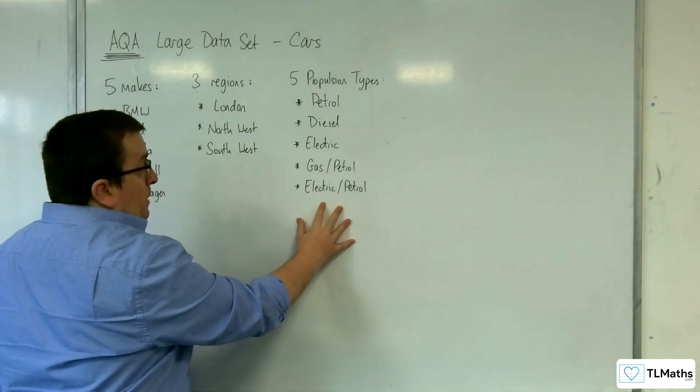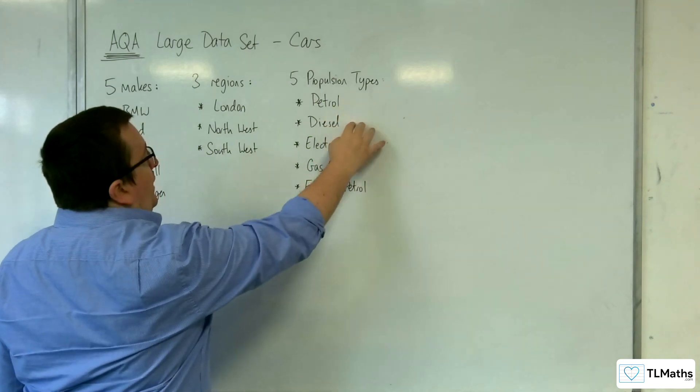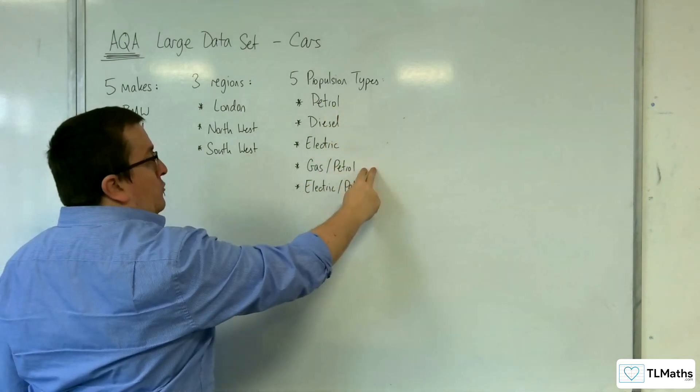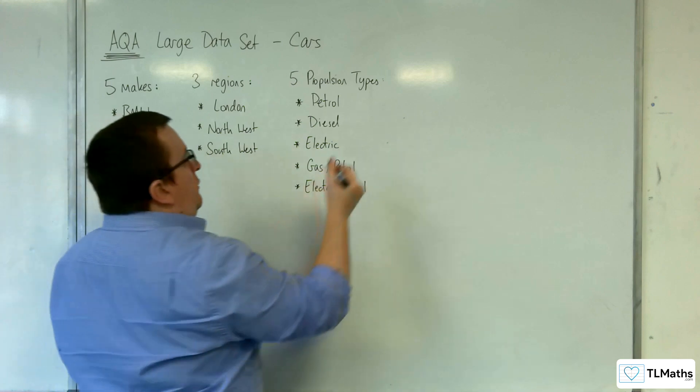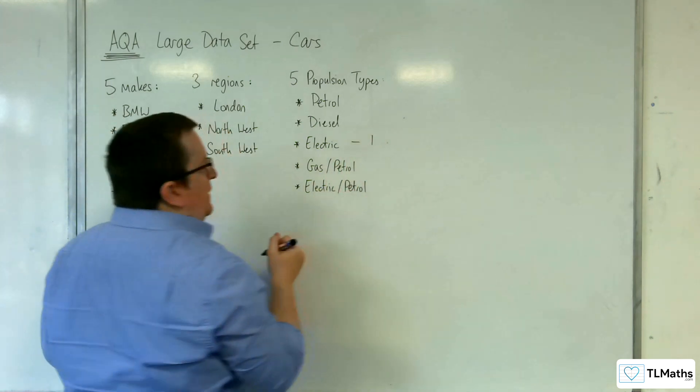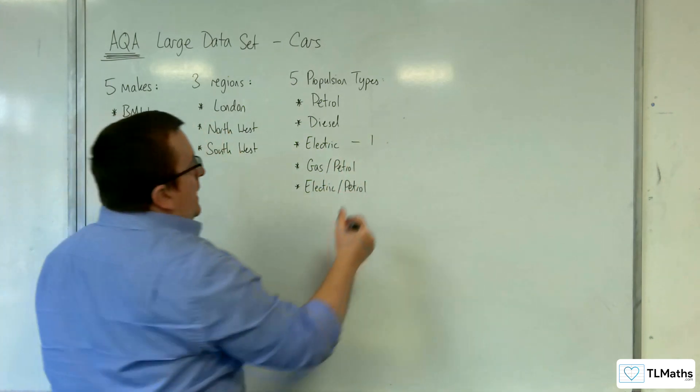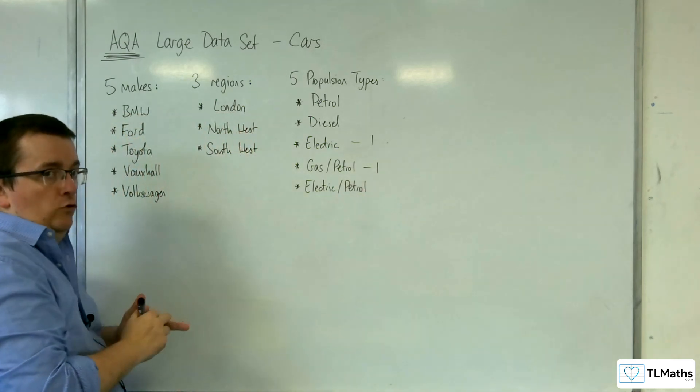There are five propulsion types: petrol, diesel, electric, gas petrol, and electric petrol. Of those, there is only one car in the data set which is electric, and there is only one car which is gas petrol.